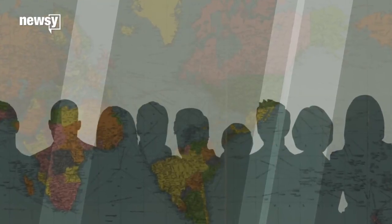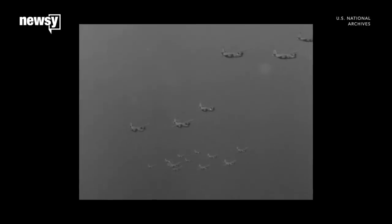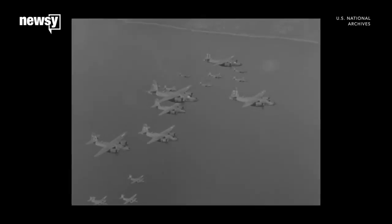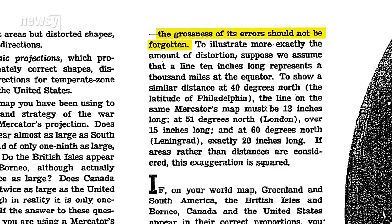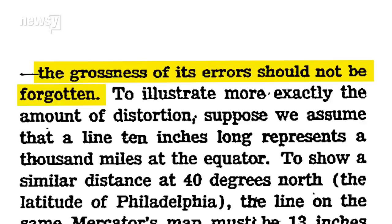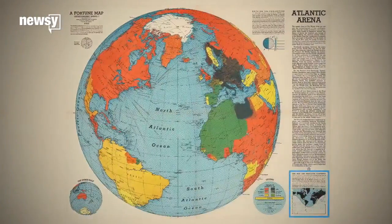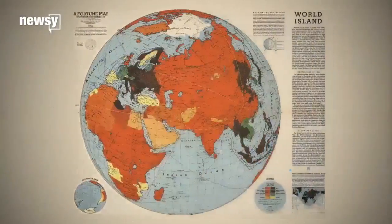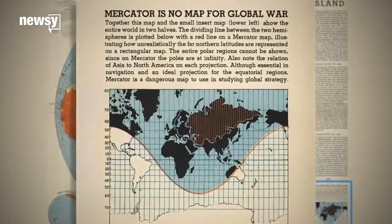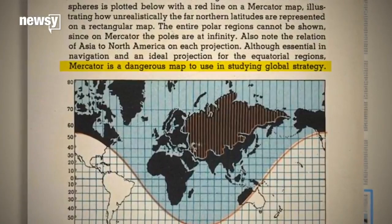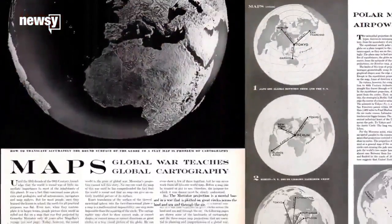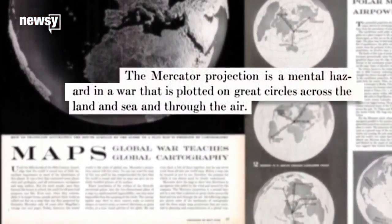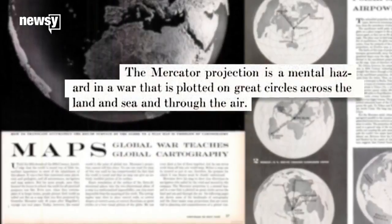Map makers and geographers were not happy. Everything started to change in the mid-20th century. There was a world war, and more airplanes were being used than ever before. Editorials published in the New York Times in the 1940s called for the Mercator to be discarded, reminding readers that the grossness of its errors should not be forgotten. In a series of orthographic maps in 1942 and 1943, Fortune magazine declared the Mercator was no map for global war and a dangerous map to use in studying global strategy.